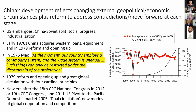In relation to reform and markets, Mao said something very significant in 1975: 'At the moment our country employs a commodity system and the wage system is unequal. Such things can only be restricted under the dictatorship of the proletariat.' In 1979, China embarked on reform and opening up and participation in the Great Global Circulation. But in 1982, it passed a new constitution implementing the four cardinal principles. In 2012, China moved into what one calls a new era after the 18th CPC National Congress, strongly shaped also by the fact that from 2011 the US embarked on its pivot towards the Pacific, moving in the direction of a new Cold War.